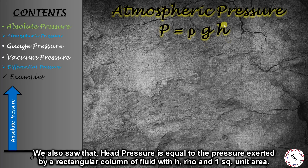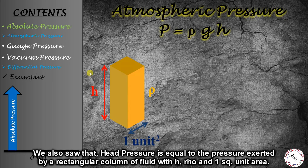We have seen that head pressure is based on a rectangular column of fluid with height h, density rho, and area of one square unit.